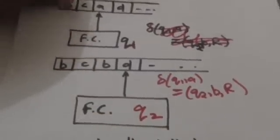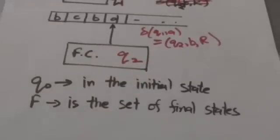Q₀ is the initial state of the Turing machine, and F is the set of final states of the Turing machine. Thank you very much.